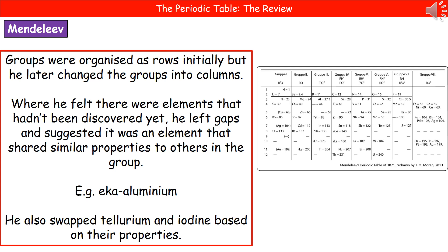He grouped together elements that have similar chemical properties. What he then found was that there were certain elements that didn't really fit where they should naturally fall. So what he did was very clever — he felt that there were elements that hadn't been discovered yet, so he left gaps for them and suggested that the missing ones were elements that shared similar properties to others in the group.